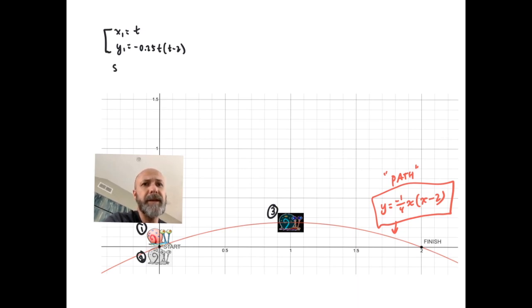And you can see that we could just substitute in that y₁ equation. In place of t, we can sub in x₁, and I can drop the subscripts, the ones, and the equation will become y = -1/4 x(x-2). So it's pretty clear to see why that first equation followed the path.